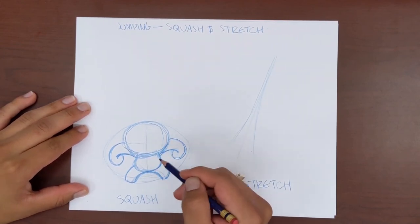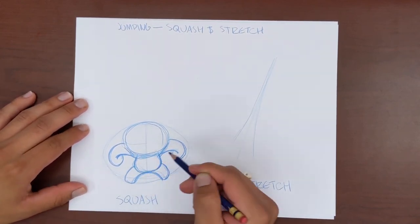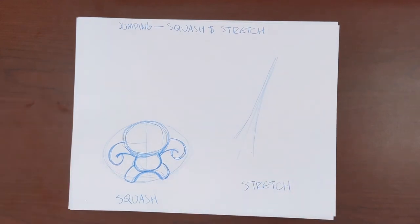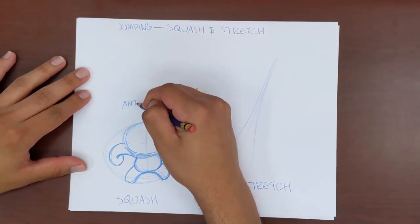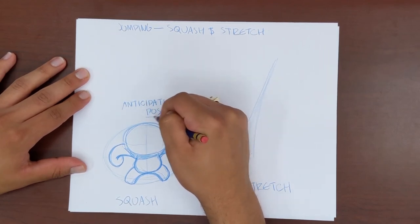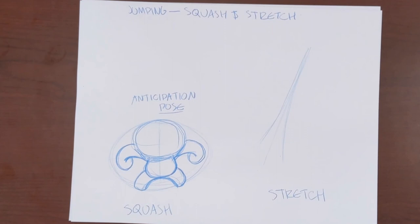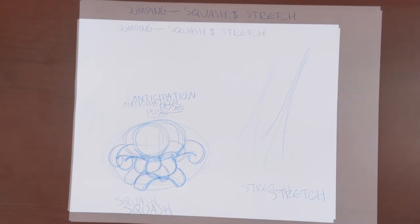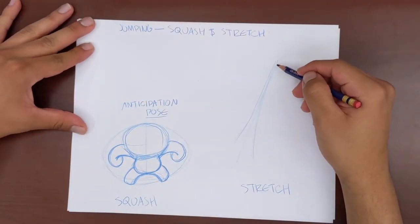For our next pose, we are going to draw what it looks like when our character goes from the squash position and jumps into the stretch position. For this motion, you can even do two LOAs reaching upward into a peak so that it almost kind of looks like a triangle. Drawing these lines as wider at the base and ending in a peak is to help guide our character's motion and emphasize that all of our character's energy is moving upward.